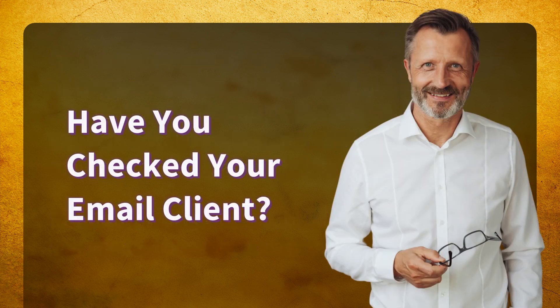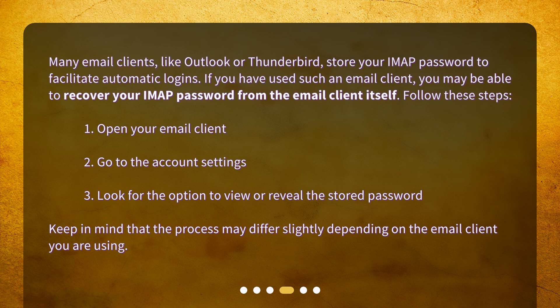Have you checked your email client? Many email clients, like Outlook or Thunderbird, store your IMAP password to facilitate automatic logins. If you have used such an email client, you may be able to recover your IMAP password from the email client itself. Follow these steps: 1. Open your email client. 2. Go to the account settings. 3. Look for the option to view or reveal the stored password. Keep in mind that the process may differ slightly depending on the email client you are using.